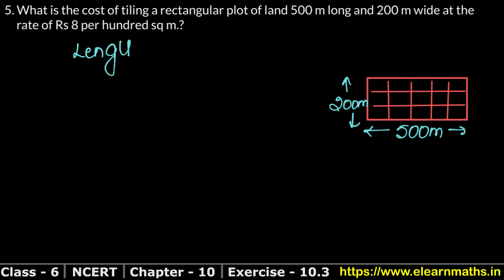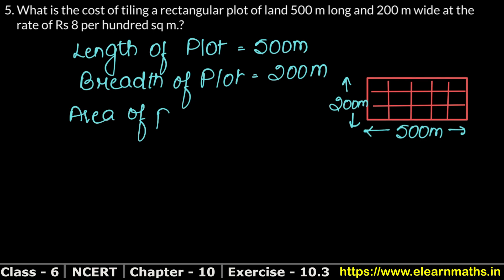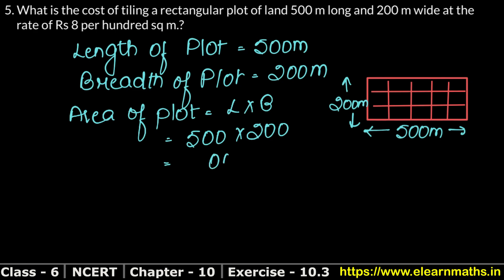Let's write the length of the plot: 500 meters. And the width of the plot: 200 meters. To find the area of the rectangular plot, we calculate length into breadth. Length is 500 and breadth is 200. That gives us 1,00,000 square meters. This is the area where the tiles will be placed.